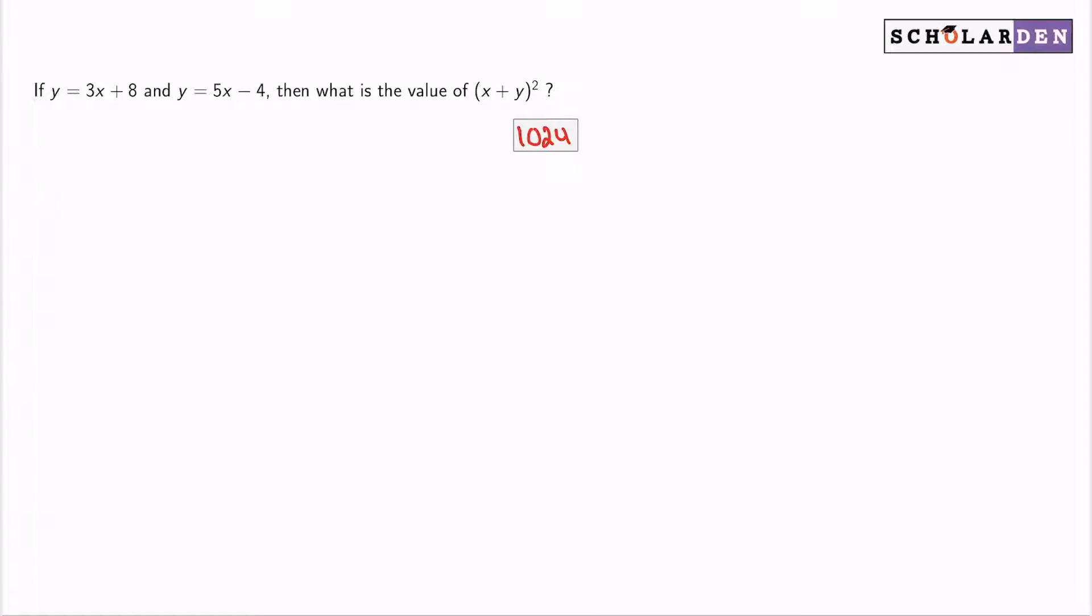So try not to get distracted. I see that the question is asking me for the value of x plus y squared. So essentially, I'm going to need to know what x and y are, or potentially I will need to know what I get when I combine them together. So two ways of thinking about it.